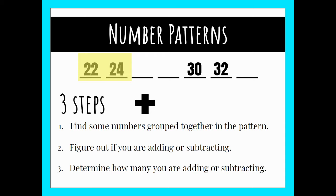Instead I can see that I am adding two — I'm counting by twos in this pattern. So I'm going to add two to each number and that'll help me solve for those missing numbers. So we go 22, 24 — if I add two more to 24 I get 26, two more is 28.